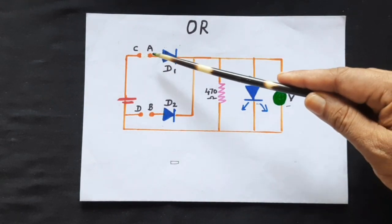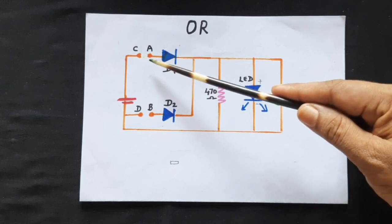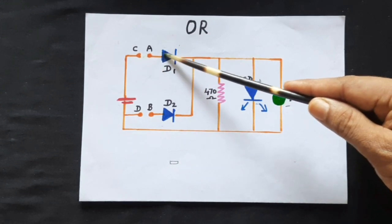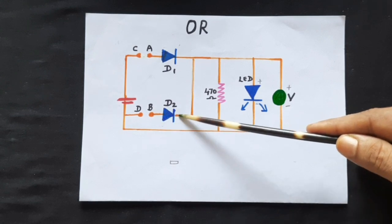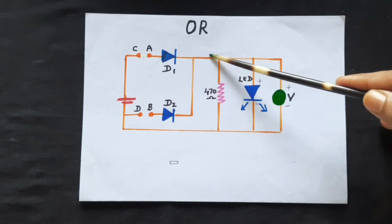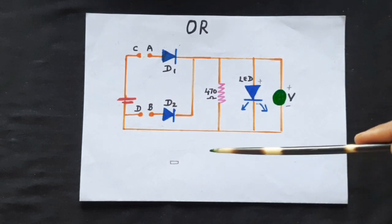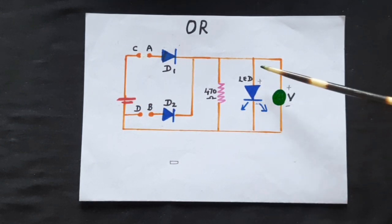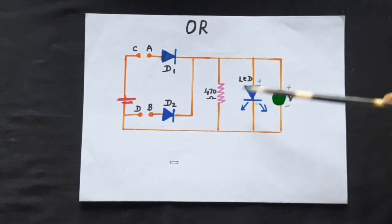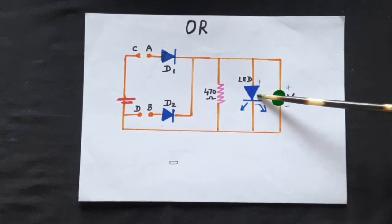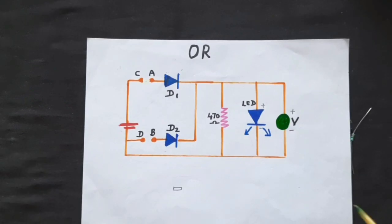Coming to the working: if A or B is high, that diode will get a forward bias — a positive voltage at the positive end of the diode will forward bias it and it will conduct. If it is the B point that is high, then that diode gets forward biased. So current will flow through the circuit and across the resistor and back to the negative, completing the circuit. If you place an LED, current will also flow through it and the LED will light up.